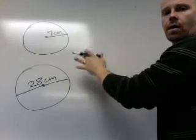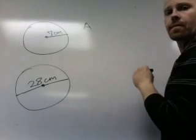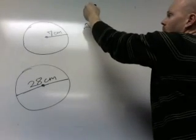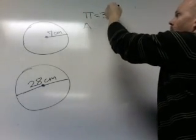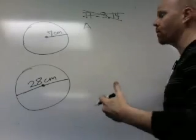All right, for this video I'm going to show you how to find the area of a circle. Only this time we're not going to use pi being 3.14, which is a perfectly fine estimation, but we're not going to use 3.14.